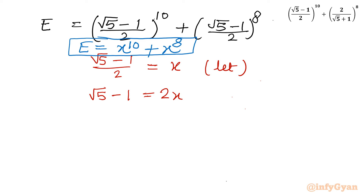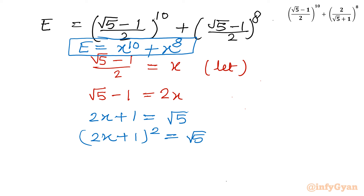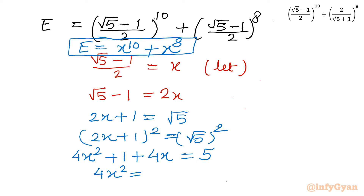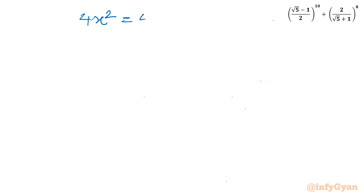Now I will add 1 to both sides, so I can write 2x + 1 = √5. Consider squaring both sides: (2x + 1)² = (√5)². Expanding: 4x² + 4x + 1 = 5. So 4x² = 4 - 4x. This equation is divisible by 4, so dividing by 4 gives x² = 1 - x.